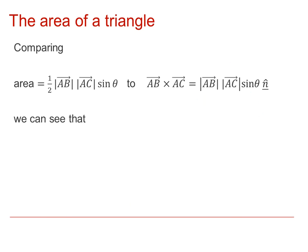But that's very similar to the formula that we've got for AB cross AC which we know is the length of the vectors, sine theta multiplied by n hat where n hat is a unit vector in the direction of the vector product. So you can see that the difference between these is that we've got a half here.